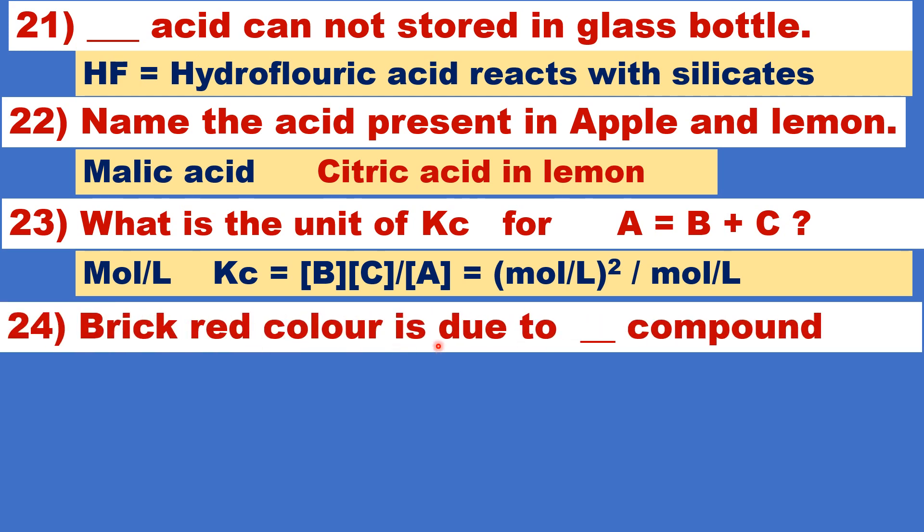Brick red color is due to why bricks are red in color? Why bricks are red in color? Due to the presence of this compound. Fe2O3. Fe2O3 gives characteristic brown brick red color to bricks.